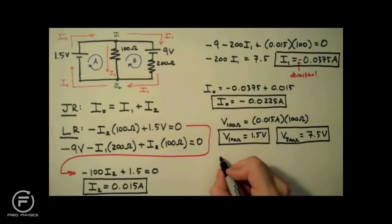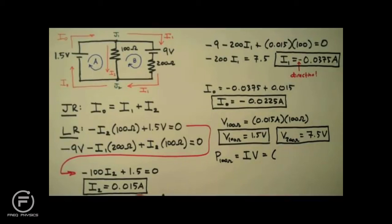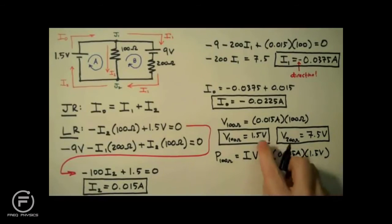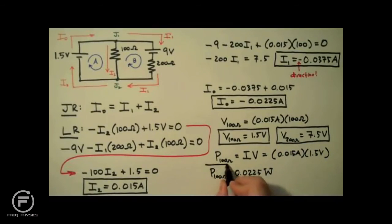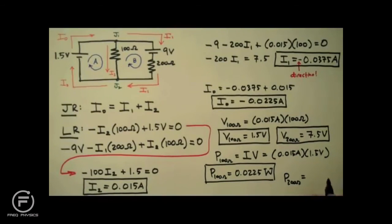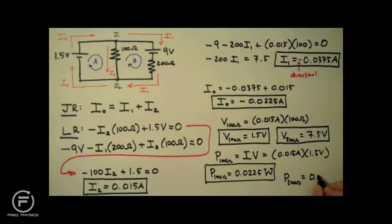To determine the power dissipated by these resistors, we simply multiply the current through by the voltage across — IV. For the 100 ohm resistor, using 15 milliamps and 1.5 volts gives a power dissipation of 0.225 watts, or 22.5 milliwatts. For the 200 ohm resistor, multiplying the current by its resistance value yields 281.25 milliwatts.